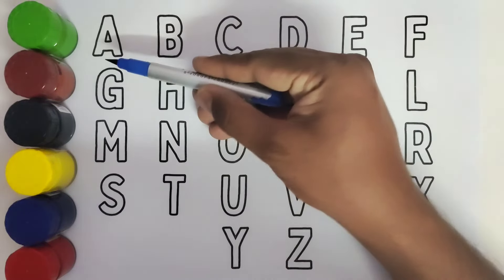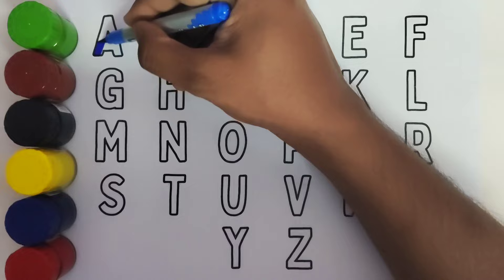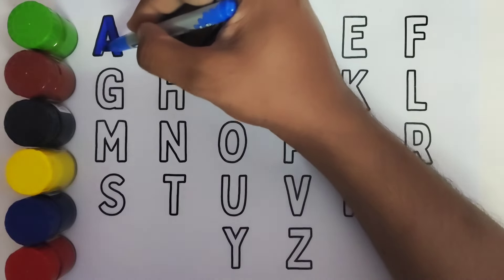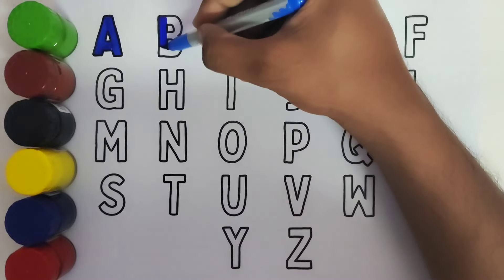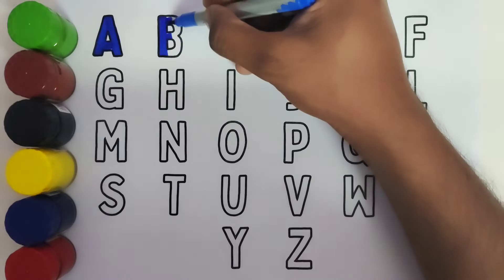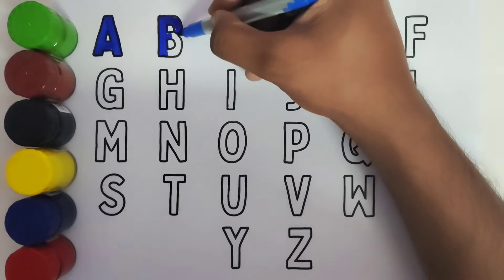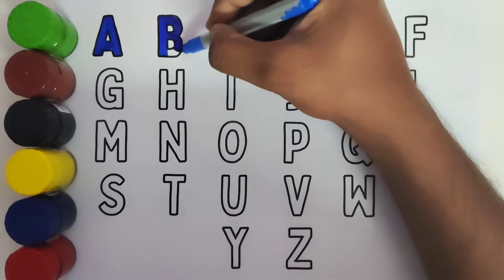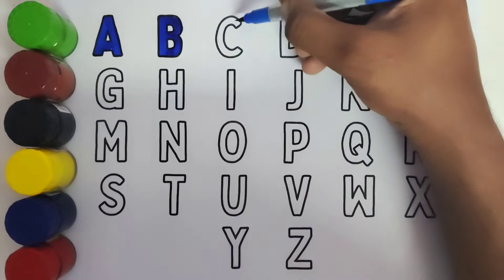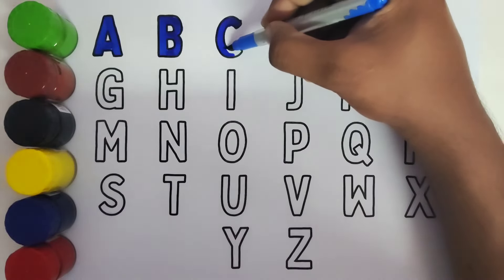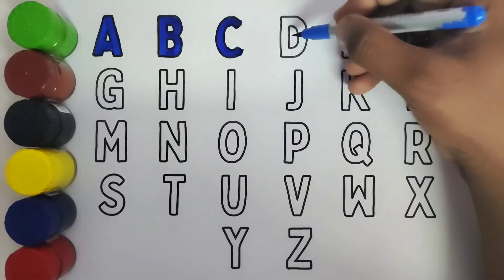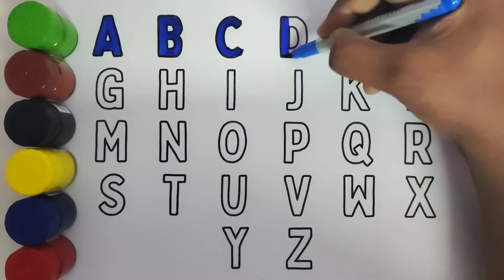This is A. A for Apple. This is B. B for Ball. This is C. C for Cat. This is D. D for Dog.